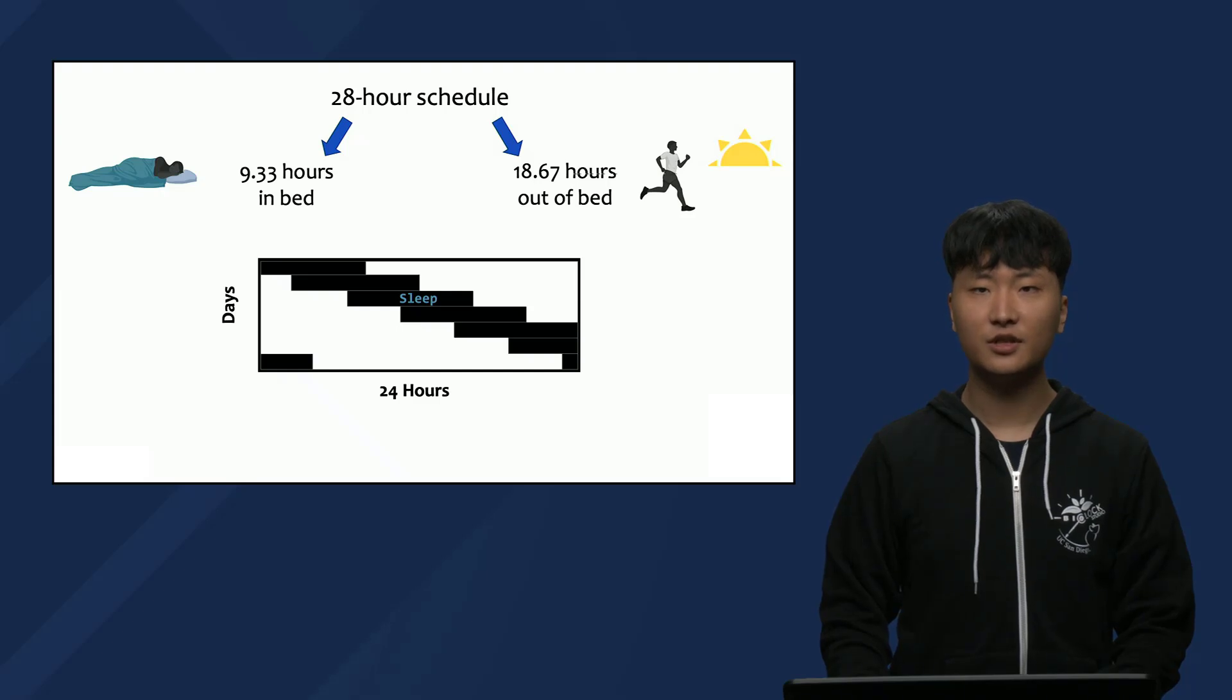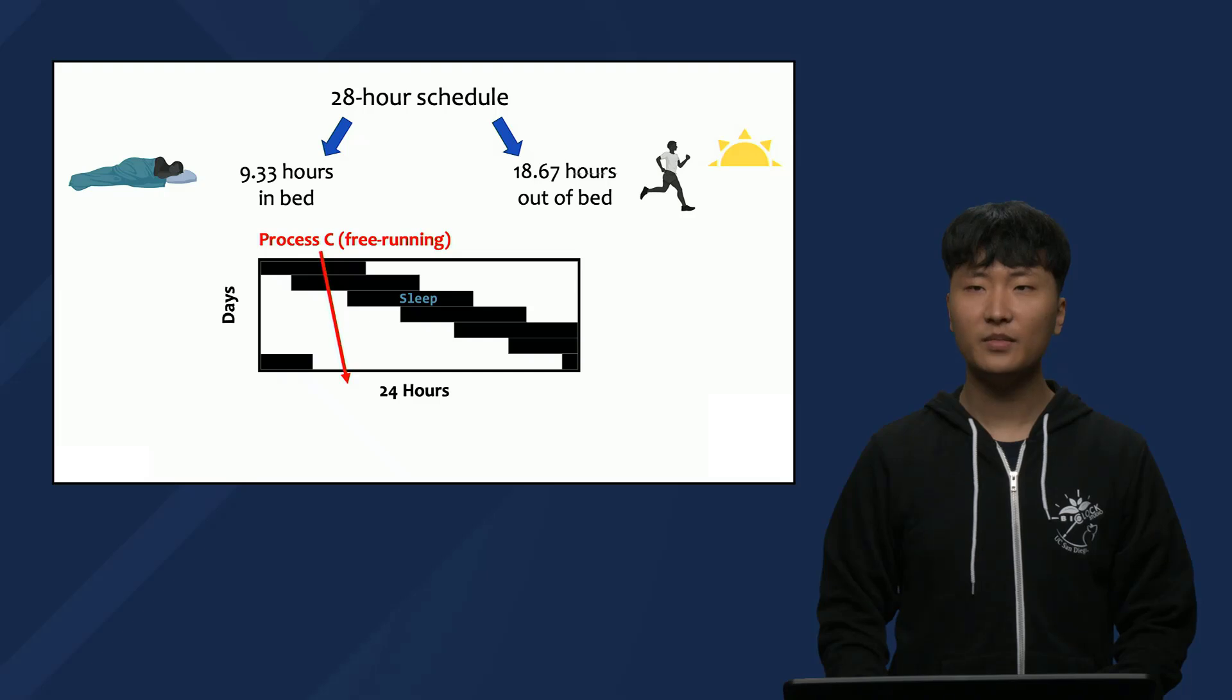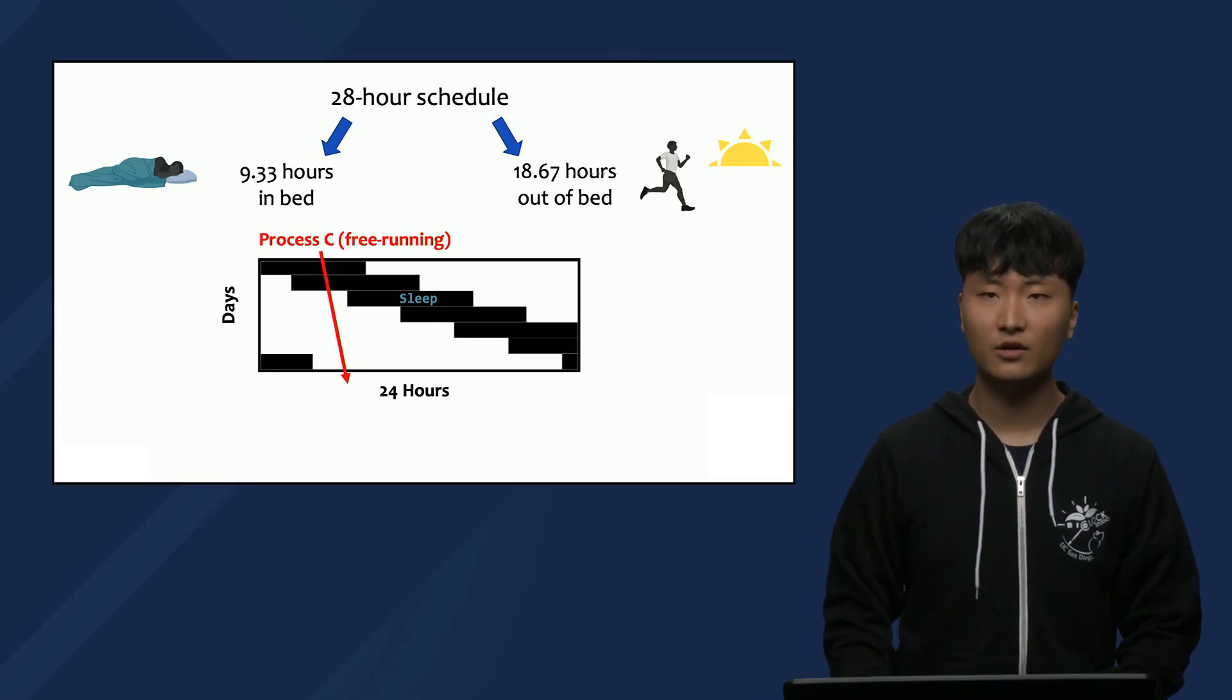So circadian rhythms, such as body temperature and alertness, and potentially Process C drive and sleep, will free run in these conditions. That means the rhythms of the participants will all stay on the internal endogenous schedule that humans have, which is slightly longer than 24 hours, but much shorter than the imposed 28-hour day.